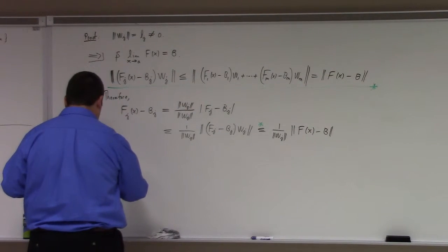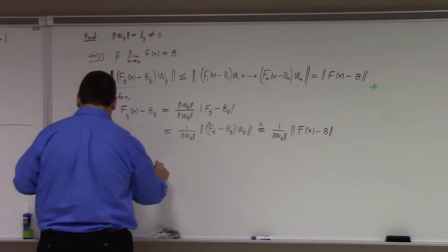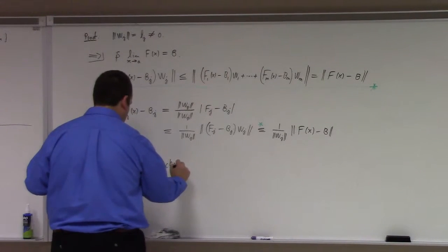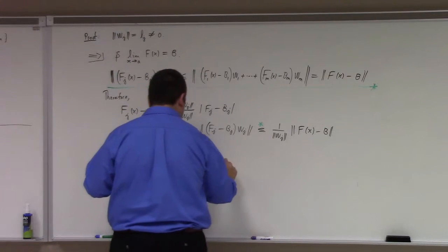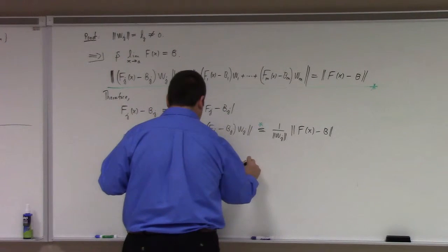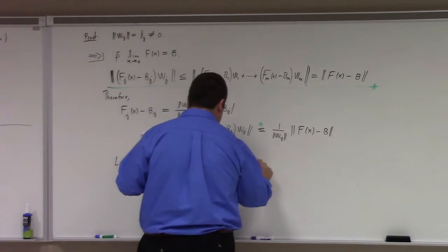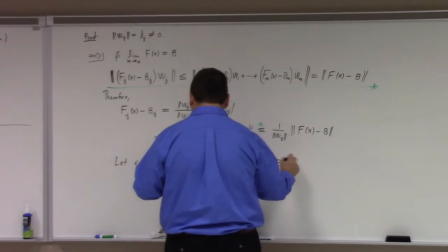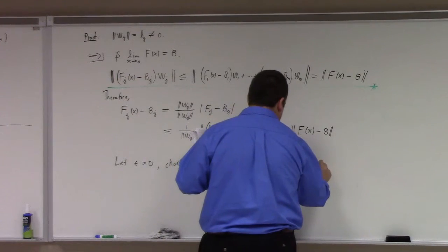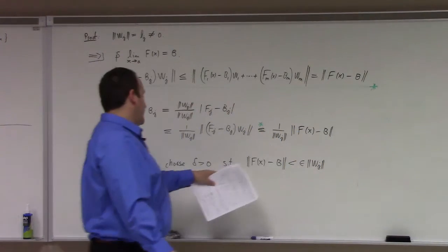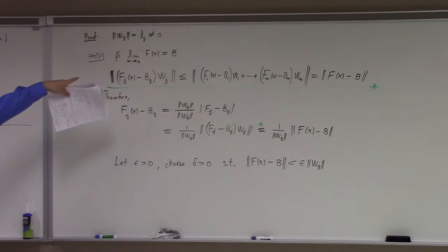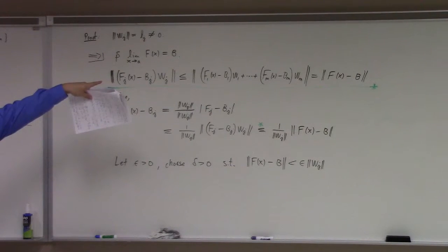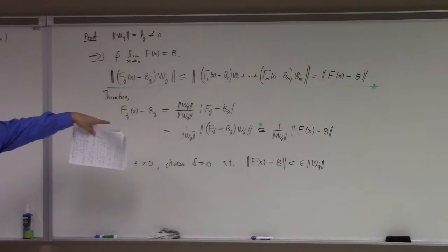Let epsilon be greater than 0, and choose delta greater than 0 such that what? Such that the norm of f of x minus b is less than epsilon times the epsilon value of wj. Why can I do that? The reason I can do that is I have supposed that the limit of the vector value function exists and is equal to b.